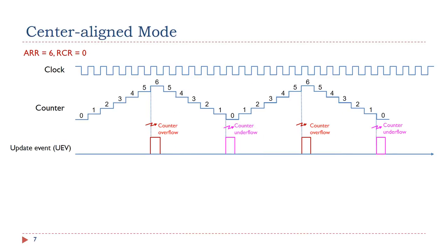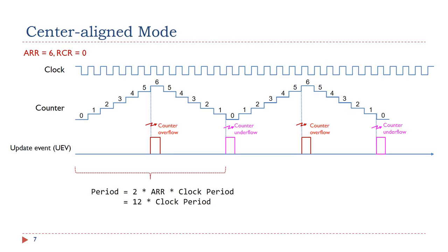In the center-aligned mode, the counter counts from 0 to the auto-reload value minus 1 and generates a counter overflow event. Then, the counter counts from the auto-reload value down to 1 and generates a counter underflow event. After that, it restarts counting from 0. In this mode, the counting direction changes automatically on counter overflow and underflow. For the center-aligned mode, the period equals 2 times ARR times the clock period.